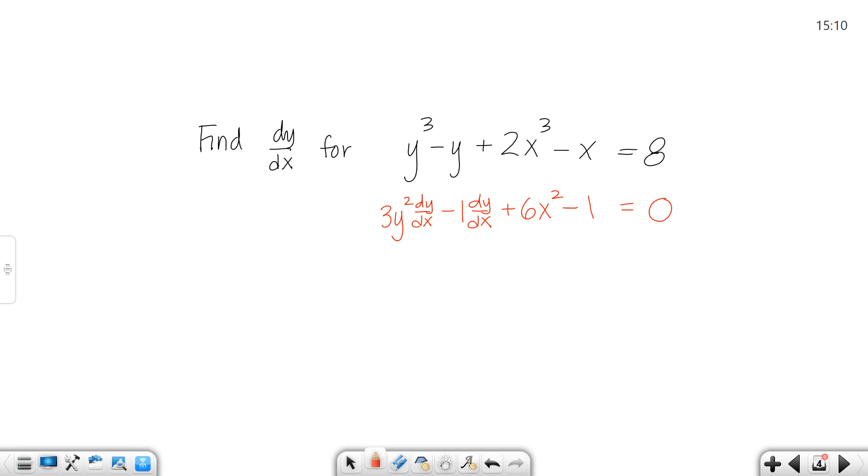Now let's look at that. For the first one, I used my basic power rule, and I brought the 3 down, 3y². Since I took the derivative of y, I needed a dy/dx thrown in there. For the second term, that's a -y, a linear term. Remember, its derivative is just the coefficient, -1. Since it was a y term, I threw a dy/dx in there. My next one's a regular power rule for x. Bring your 3 down, that gives me 6x². For the fourth term, I have a linear term with coefficient -1. And 8 is a constant. The derivative of a constant is 0.